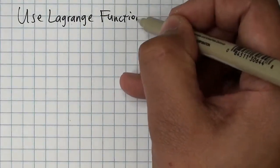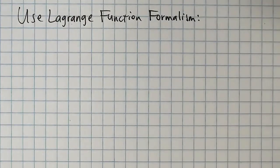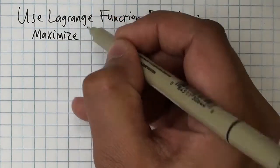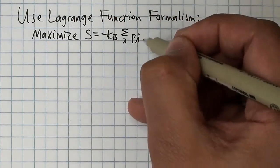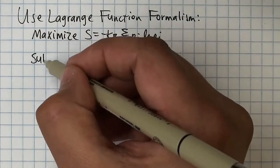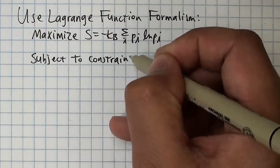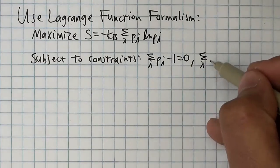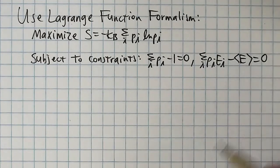In the next part, we use the Lagrange function formalism to maximize the entropy, s equals minus kb sum pi log pi, subject to two constraints on the probability distribution and the average energy. For a brief review of Lagrange multipliers, please see the document linked below.